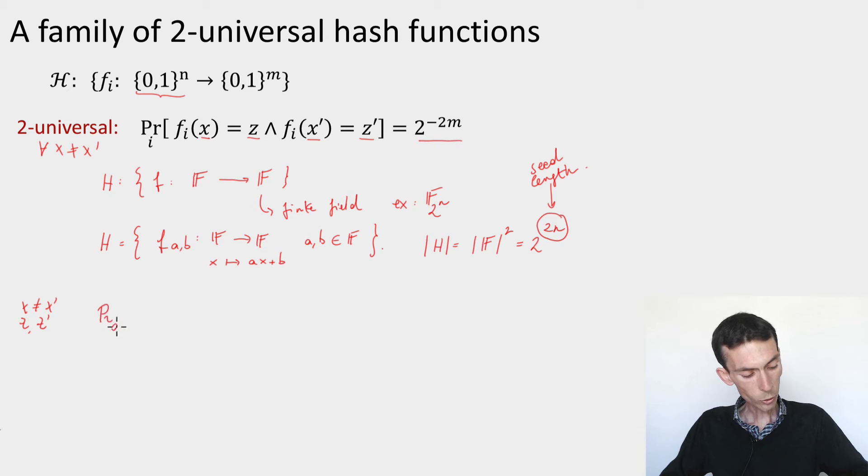So what's the probability when I choose a random function, which is the same as choosing these coefficients a and b at random, that I have ax plus b equals to z, and ax prime plus b equals to z prime.